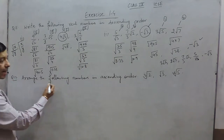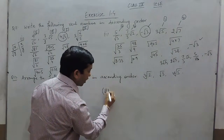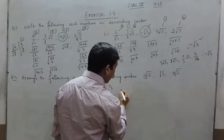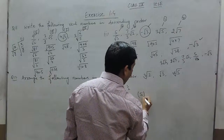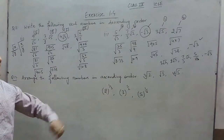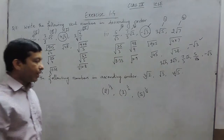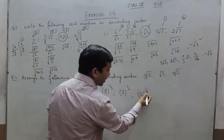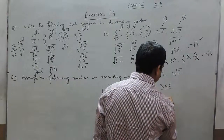Question number 12: arrange the following numbers in ascending order. We have 2^(1/3), 3^(1/2), and 5^(1/6). When comparing these numbers, finding approximations is not straightforward, so it is better to use the LCM method. The denominators are 3, 2, and 6, and their LCM is 6... actually 12.